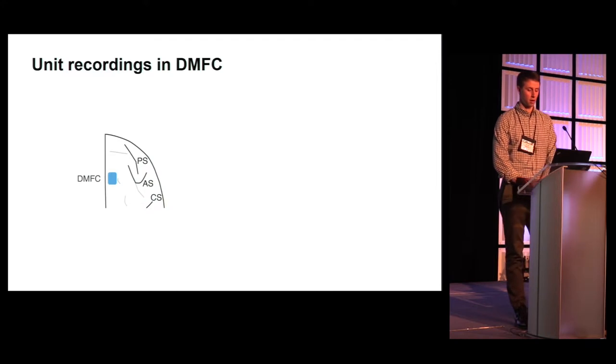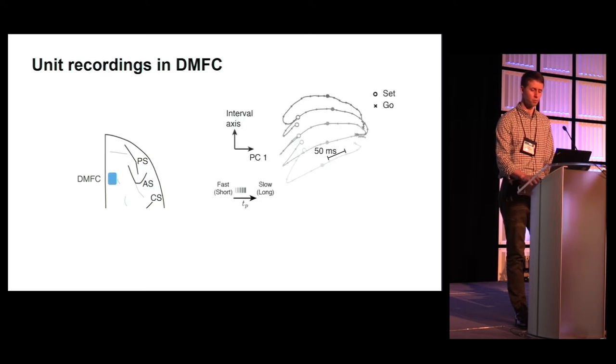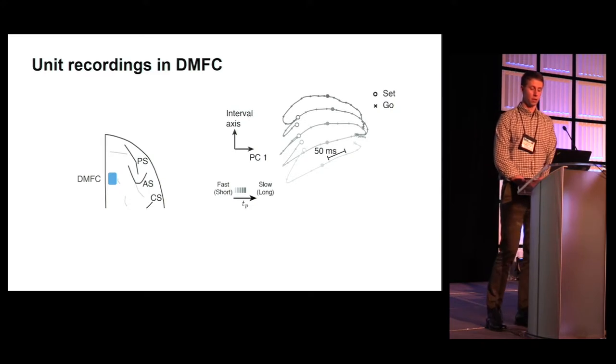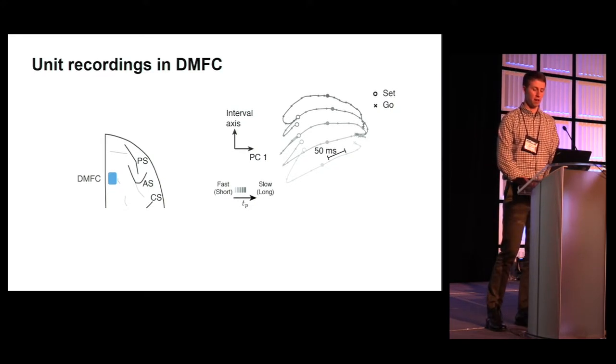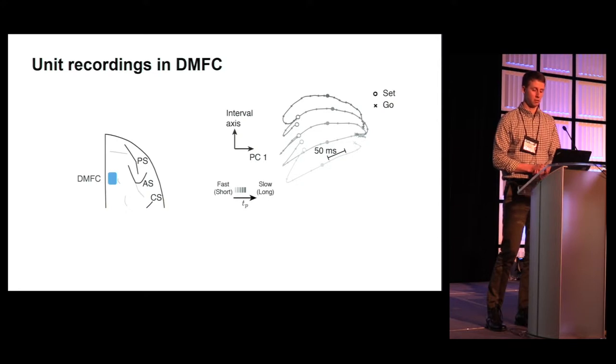We recorded neural firing rates from dorsal medial frontal cortex, putatively the supplementary eye field, pre-supplementary motor area, and dorsal supplementary motor area. This region has been implicated in timed motor behavior. Low dimensional projections of neural activity recorded in DMFC match the predictions of the hypothesis. Here we see neural activity of trials separated into five bins according to produced interval, plotted along the axis which separated data maximally according to interval, and then the orthogonal component of the first principal component of the data. Trajectories are ordered by increasing produced duration, again light to dark, and evolve at different speeds as can be seen by small dots separating 50 millisecond increments and the large dots representing the midway points along each trajectory.